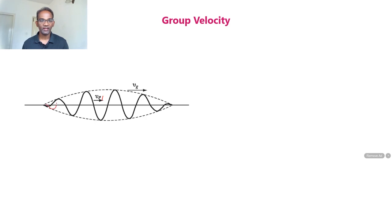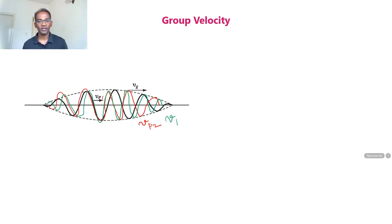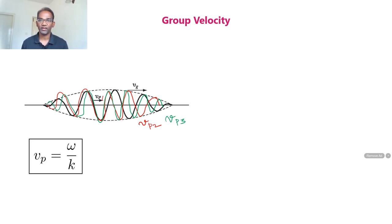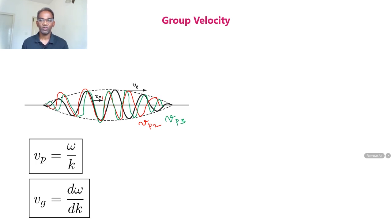If we have one more frequency, it will travel with a different velocity VP2, and another wave will travel with a slightly different velocity VP3. When we join the envelope shown by the broken lines, what we get is a wave packet. The wave packet will be traveling with a velocity Vg, known as the group velocity. Inside the wave packet, there are different ripples or spectral components traveling with slightly different velocities known as the phase velocity. Phase velocity is denoted by VP equal to omega divided by k, and the group velocity is given by dω/dk.